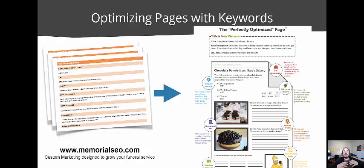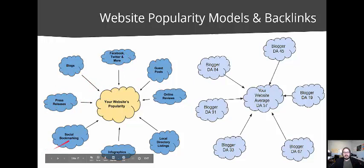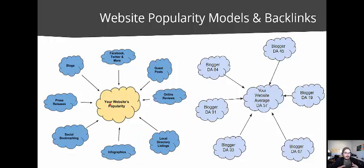When writing articles, we look at the website popularity model. Google is basically a popularity contest — whoever gets the most high-quality votes effectively wins. You can get what we call backlinks through Facebook, Twitter, blogs, press releases, social bookmarking, infographics, local directory listings, and online reviews. All of these contribute to your website's popularity, and the person with the highest popularity always wins.